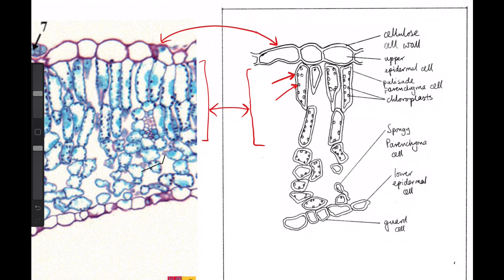So down here, we have our spongy parenchyma cells with air spaces. And you can still see some chloroplasts within them. Interestingly, the upper epidermis and the lower epidermis don't have chloroplasts. And we can see that.